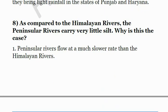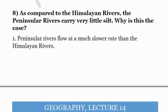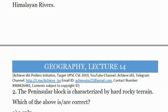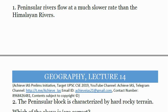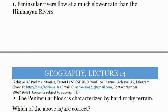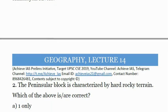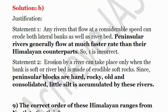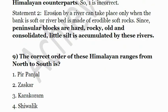The eighth question: as compared to the Himalayan rivers, the peninsular rivers carry little silt. Why? First, peninsular rivers flow at a much slower rate than the Himalayan rivers. Second, the peninsular block is characterized by hard rocky terrain. The first statement is actually wrong — peninsular rivers flow at a quite fast rate. The second is the reason: the peninsular block is characterized by hard rocky terrain, whereas the Himalayan rivers flow over semi-consolidated rock, causing much more erosion and silt transport. The answer is B — second only. The peninsular blocks are hard, rocky, old, and consolidated.